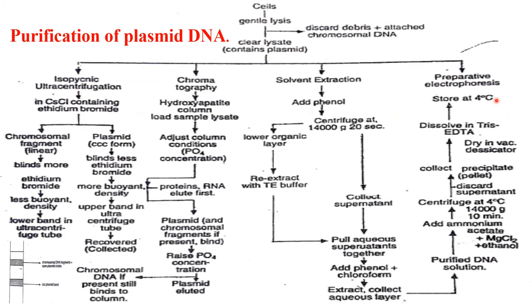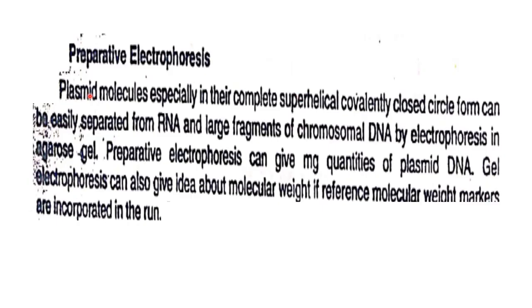Preparative electrophoresis: plasmid molecules, especially in their complete superhelical covalently closed circular form, can be easily separated from RNA and large fragments of chromosomal DNA by electrophoresis in agarose gel. Preparative electrophoresis can give milligram quantities of plasmid DNA. Gel electrophoresis can also give an idea about molecular weight if reference molecular weight markers are incorporated in the run.